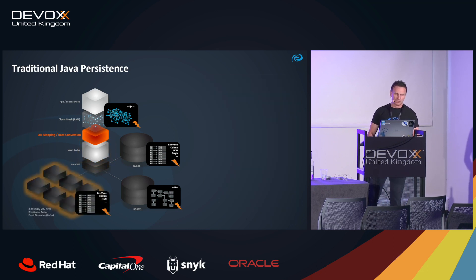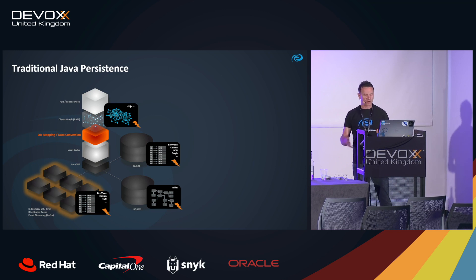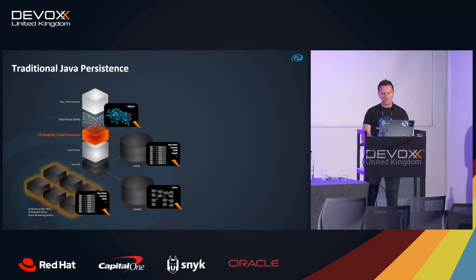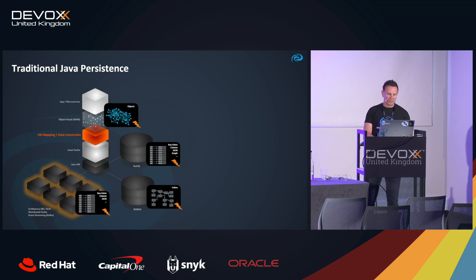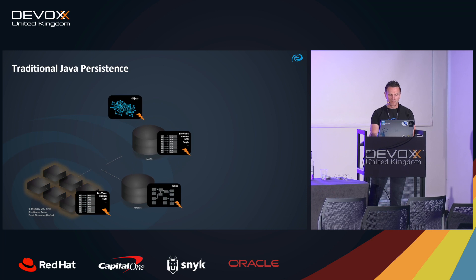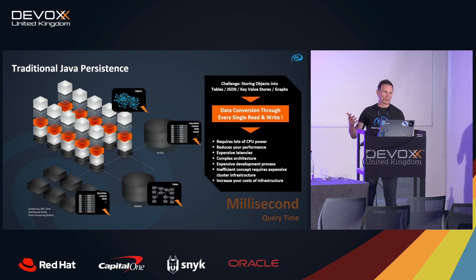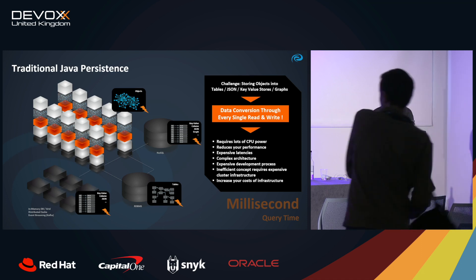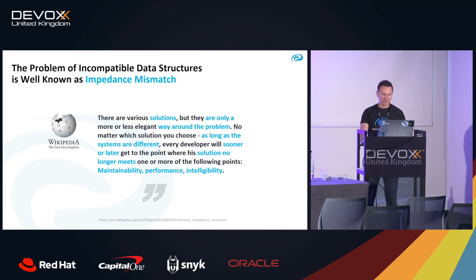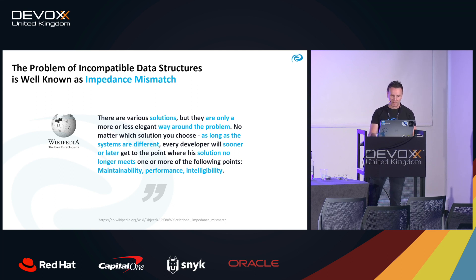Distributed solutions like distributed caches, in-memory data grids, and in-memory databases have the same problem — they also use key-value, column store, JSON, or similar formats. As developers we do not try to solve this core problem; to accelerate our solutions we actually just copy machines. You can read more about this impedance mismatch between Java object graphs and database-specific data structures on Wikipedia or in books.